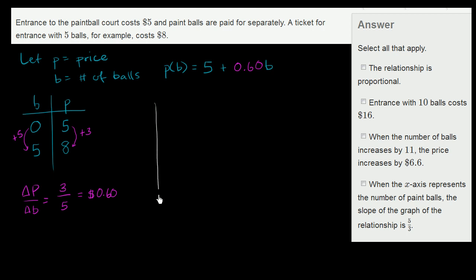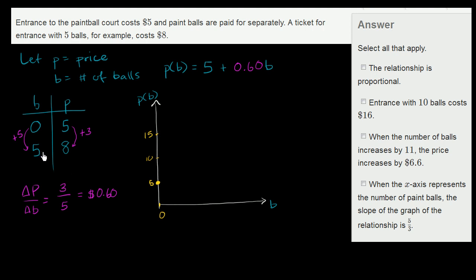Let's also try to graph it. So that's our price axis, the vertical axis, and this is the number of balls axis. When balls are 0, the price is 5 — let's say this is 5, this is 10, this is 15. So when we have 0 balls, we pay 5. When we have 5 balls, we paid $8, which gets us right around here. Two points define a line, so this function is a linear function.